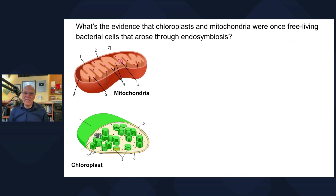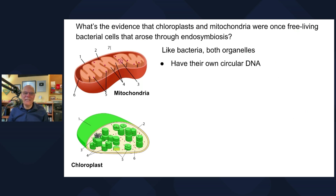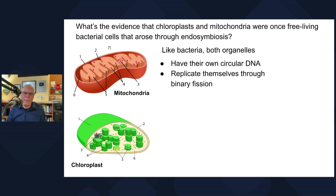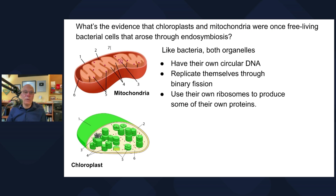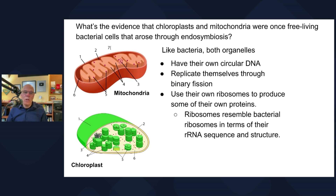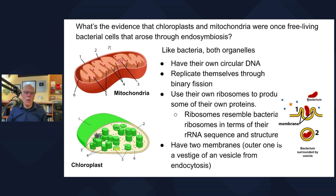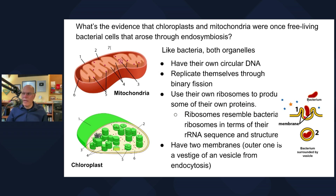What's the evidence for this astounding idea? Like bacteria, both mitochondria and chloroplasts have their own DNA — because they were once independent cells. They replicate themselves through binary fission; we don't replicate our mitochondria, they replicate themselves. They have their own ribosomes that produce some of their own proteins, and those ribosomes resemble bacterial ribosomes in terms of RNA sequence and structure. Also, both mitochondria and chloroplasts have two membranes — a vestige of the fact that they were once engulfed by another cell that surrounded them with a membrane.